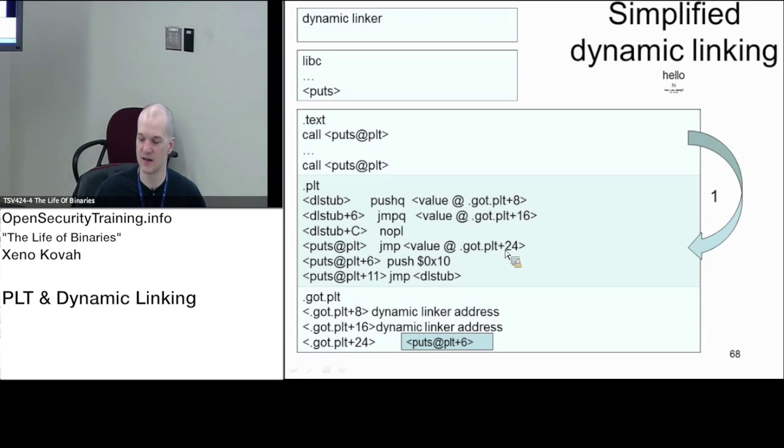So call puts@PLT is going to be actually calling down to here, this puts@PLT. That is going to jump, and this is the actual dereferencing. It's saying jump to the value at .got.plt plus 24. So first you're actually calling to the stub here, but then the stub is doing a jump and it's dereferencing the .got.plt plus 24.